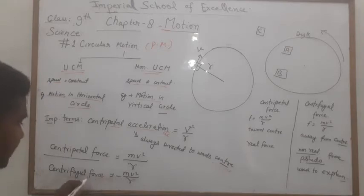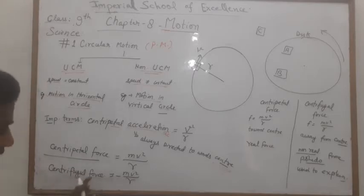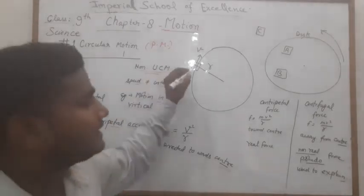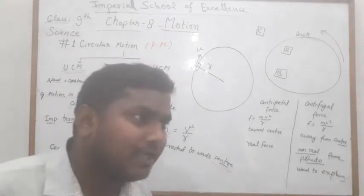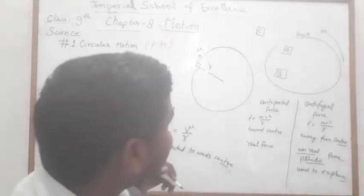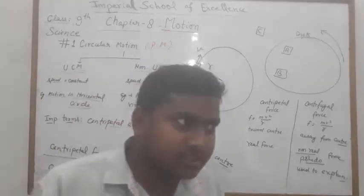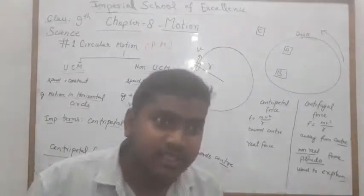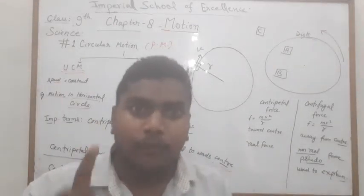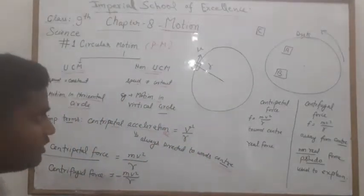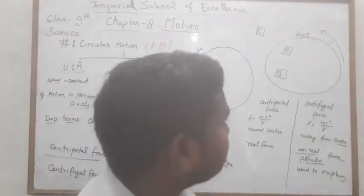Centripetal force से मिलता-जुलता एक और important term है - centrifugal force। Centrifugal force का magnitude बिल्कुल centripetal force के equal होता है, बस यह directed away from the center होता है। यह body पर लगता है और एक तरह का shadow force या non-real force है। जितना centripetal force लगेगा, exactly उतना ही centrifugal force लगेगा, लेकिन opposite direction में।